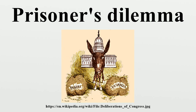The Prisoner's Dilemma is a standard example of a game analyzed in game theory that shows why two completely rational individuals might not cooperate, even if it appears that it is in their best interest to do so. It was originally framed by Meryl Flood and Melvin Drescher working at RAND in 1950. Albert W. Tucker formalized the game with prison sentence rewards and named it Prisoner's Dilemma, presenting it as follows.